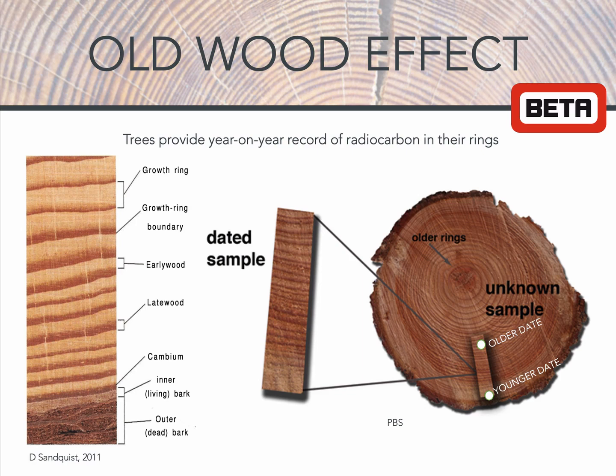When dating a sample of wood, you are choosing a subset of these tree rings for your analysis. Therefore, you're subsetting a window of time in which the tree was growing. Thus, a piece of wood taken from the center would date much older than a piece of wood taken from the tree's bark. The difference in ages depends on how old the tree was when it was growing.